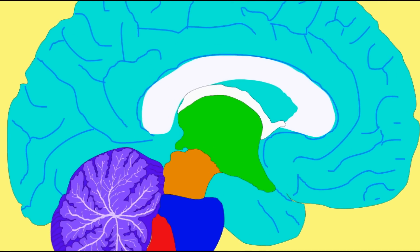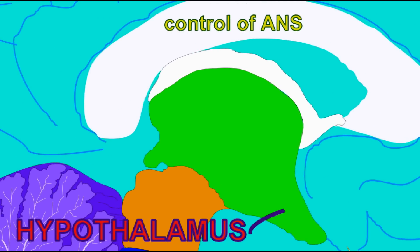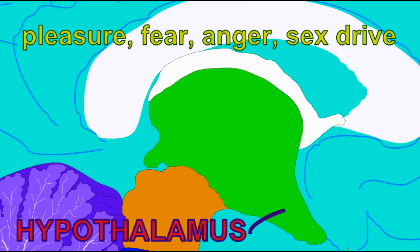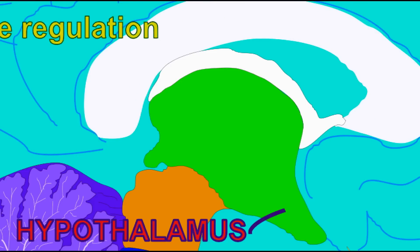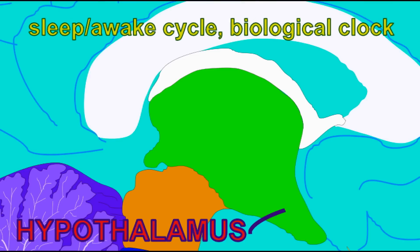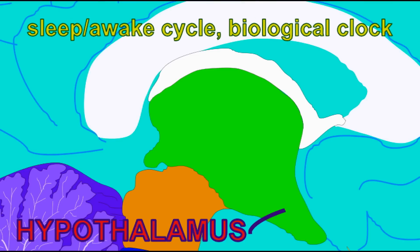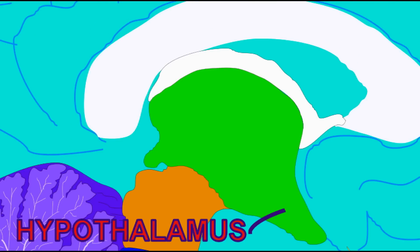Second, it stimulates the thirst centers of the hypothalamus. When the brain generates the drive of being thirsty, one is more likely to seek out water, and this increased fluid intake will raise blood volume and thus blood pressure.